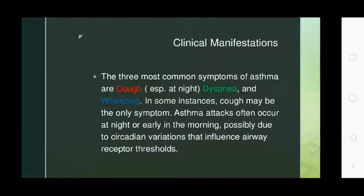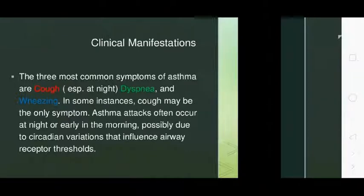Clinical manifestations of asthma: the most common symptoms are cough — especially at night — dyspnea, and wheezing. In some patients, cough may be the only symptom. Asthma attacks often occur at night or in the early morning, possibly due to circadian variations that influence airway receptors.